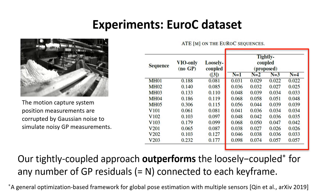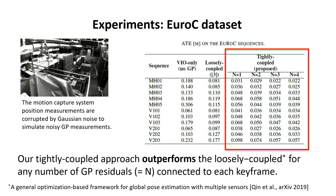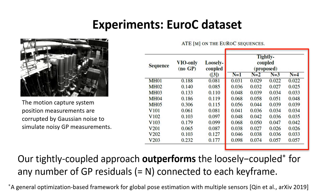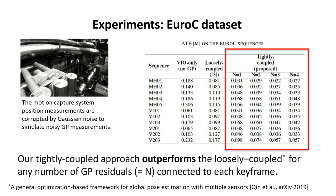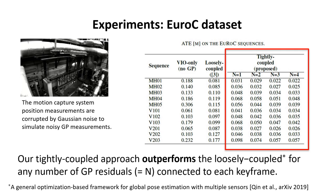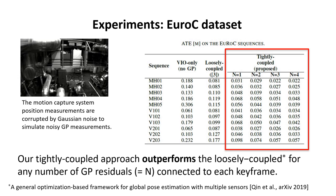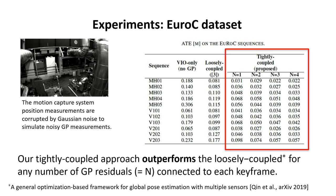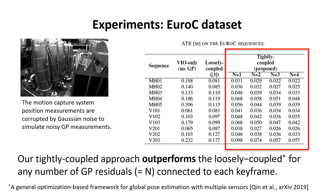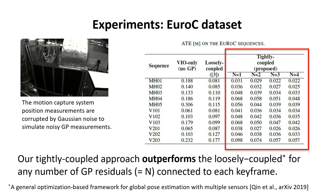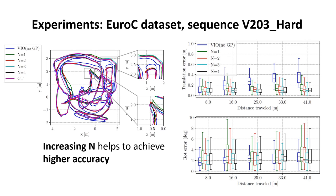We evaluated the proposed method on two datasets. The first dataset is the EUROC dataset, where we corrupted the ground truth measurements with zero-mean Gaussian noise to simulate noisy global positional measurements. The table in this slide shows the absolute trajectory error achieved by the VIO-only algorithm — where no global measurements are considered — the loosely coupled approach, and our proposed method with different values of N. N is the number of global positional residuals connected to each keyframe in the sliding window. Our tightly coupled approach outperforms the loosely coupled for any value of N. Increasing N until a certain limit helps to achieve lower translation and rotation error, as shown in the right plot of this slide.